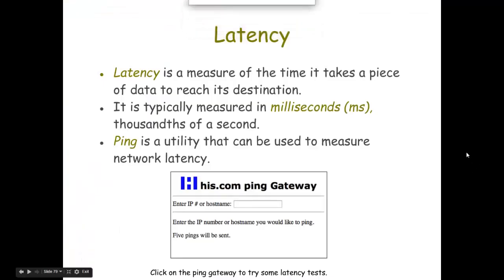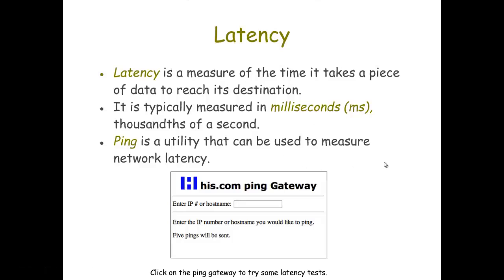You may run out of free tests for your network per day using that tool, so here's an alternative one you can try as well. As a recap, bandwidth and latency are two measures of internet performance. Bandwidth is the throughput — how much data per second can be transferred in terms of uploading and downloading. Latency refers to the amount of time it takes a piece of data to reach its destination.